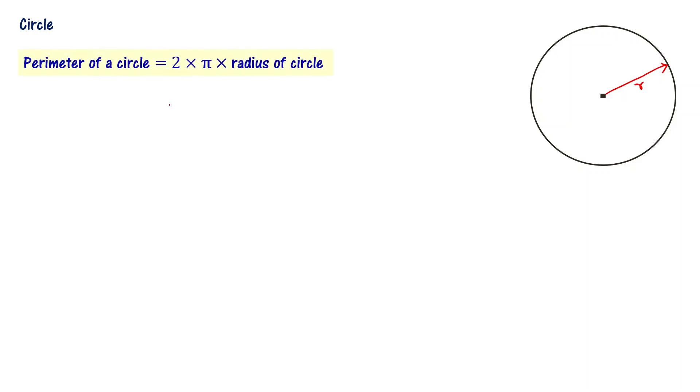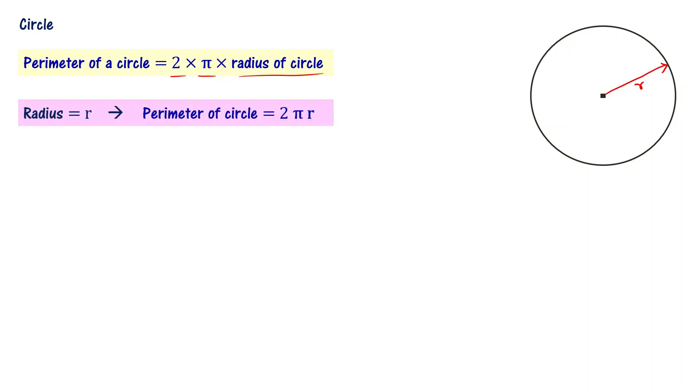Circle is also a 2D plane figure. In the case of a rectangle, we need length and width to specify it. But for a circle, we need to specify only one parameter — the radius. If you know the radius of the circle, then the perimeter (circumference) of the circle is defined as 2 times pi times radius: perimeter = 2πr.